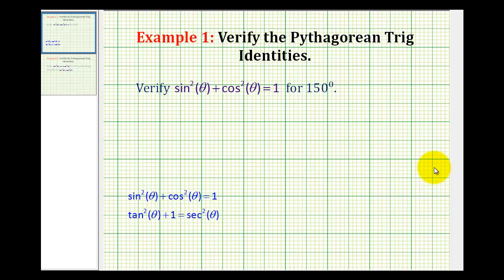In this video, we'll verify two of the Pythagorean identities for specific angles. For this first example, we want to verify that sin²(θ) + cos²(θ) = 1 when θ equals 150 degrees.